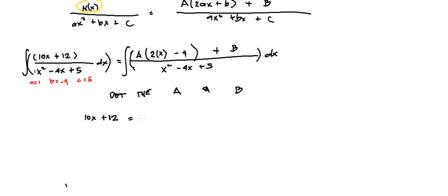So we have 10x plus 12 is equal to A times 2x minus 4 plus B, right? So this is now our equation 1.